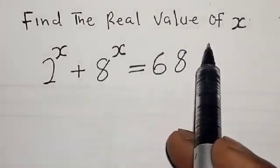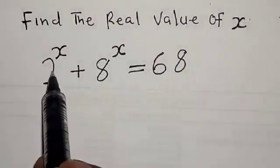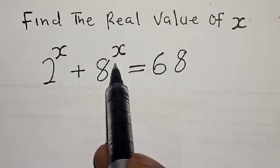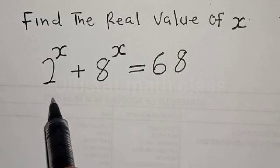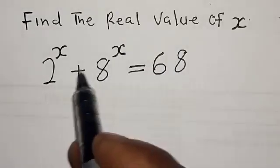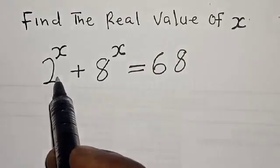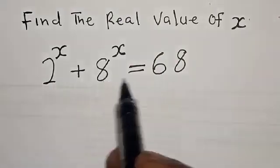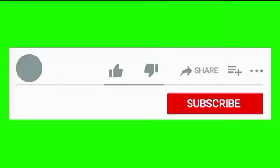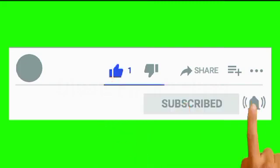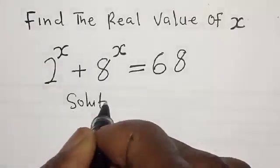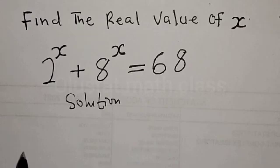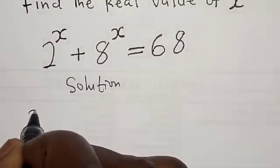Find the real value of x: 2 raised to power x plus 8 raised to power x is equal to 68. Hi everyone, welcome to my class. In this class we want to find the real value of x from this given equation, 2 raised to power x plus 8 raised to power x is equal to 68. Before we proceed, please don't forget to like, share, comment and subscribe. Thank you.